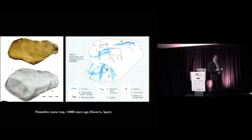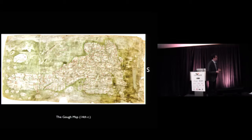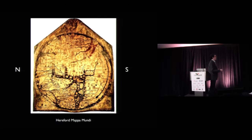And obviously map-making took off. Here's a 14th-century map of England — it's a road map. And here's another map from around the same time showing the entire known world: Europe, Africa, and at the very center, of course, Jerusalem. This is a very religious map. Here's Asia, and that's the Garden of Eden.